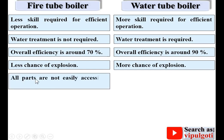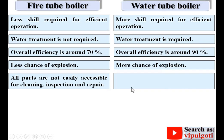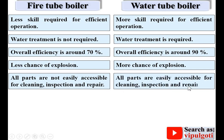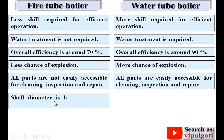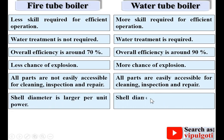In a fire tube boiler, all parts are not easily accessible for cleaning, inspection, and repair. Whereas in case of a water tube boiler, all parts are easily accessible for cleaning, inspection, and repair — as seen in the Babcock Wilcox boiler. Shell diameter is larger per unit power in fire tube boilers, whereas in water tube boilers shell diameter is smaller per unit power.